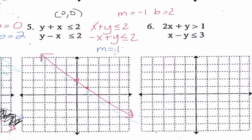For the second line, my slope is positive 1 and my y-intercept is 2. From 2, I go up 1 and over 1. This line is solid. Now I think: if (0, 0) works, my final solution is in that overlapping region. If (0, 0) does not work, the solution would be on the other overlapping side. Let me check by substituting (0, 0).